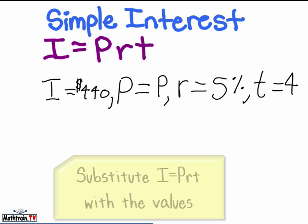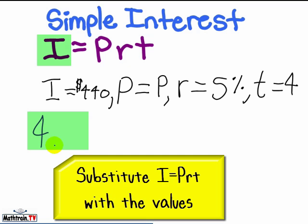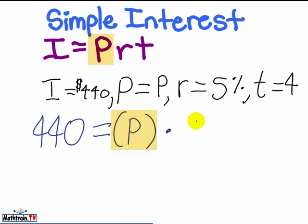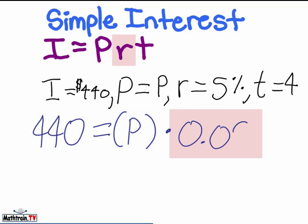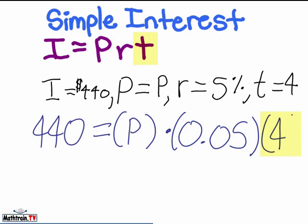So now we're going to do 440 equals P. We're going to make 5% into 0.05. And then we're going to multiply it by 4. Now we will multiply all this and you get 0.2.